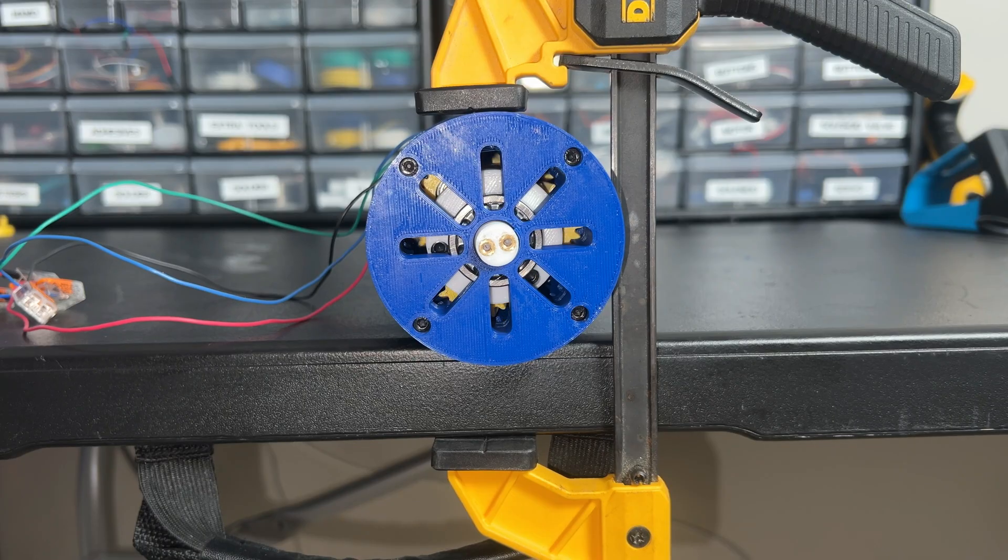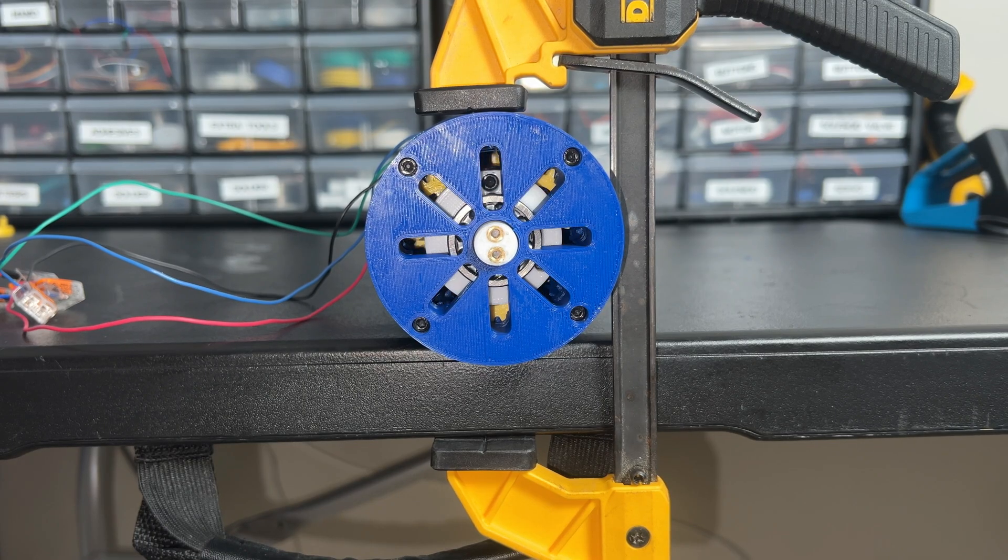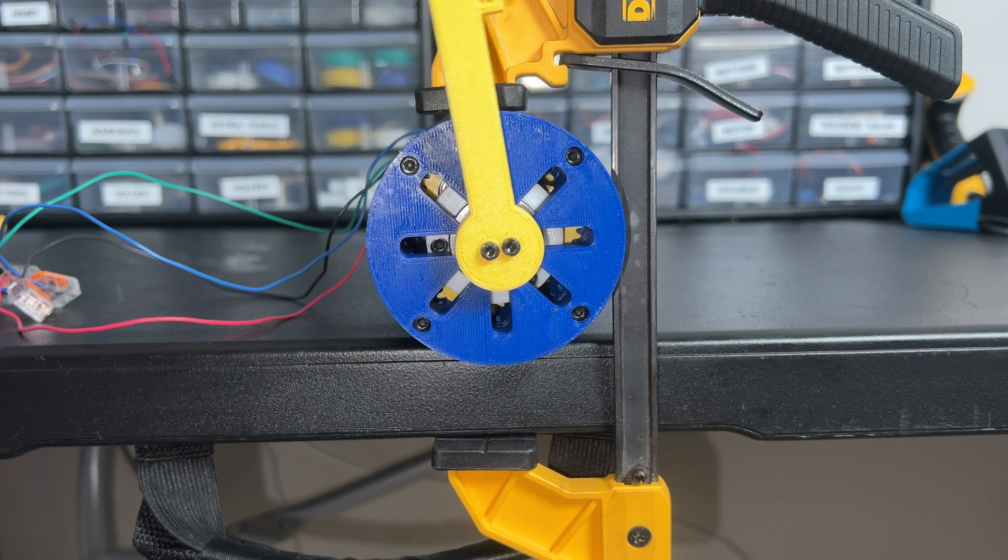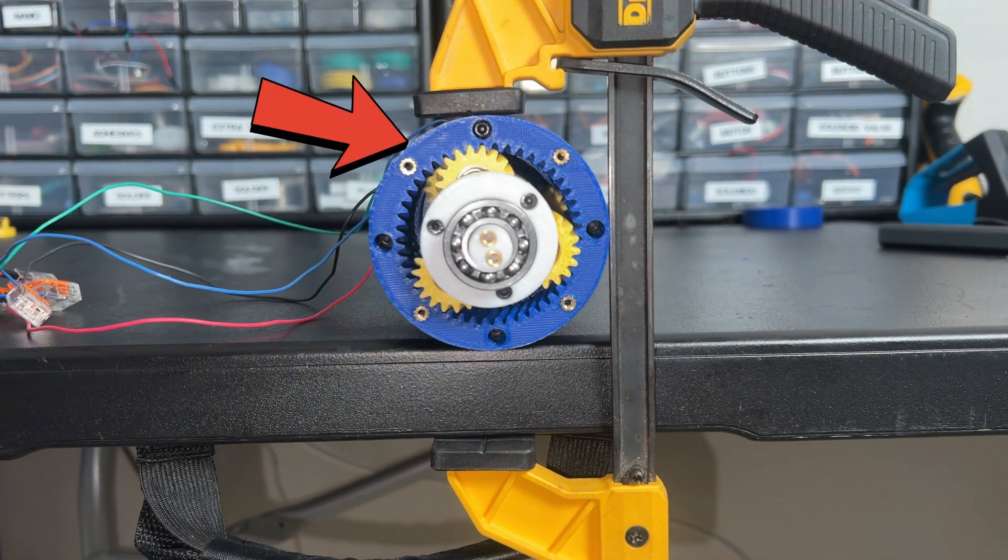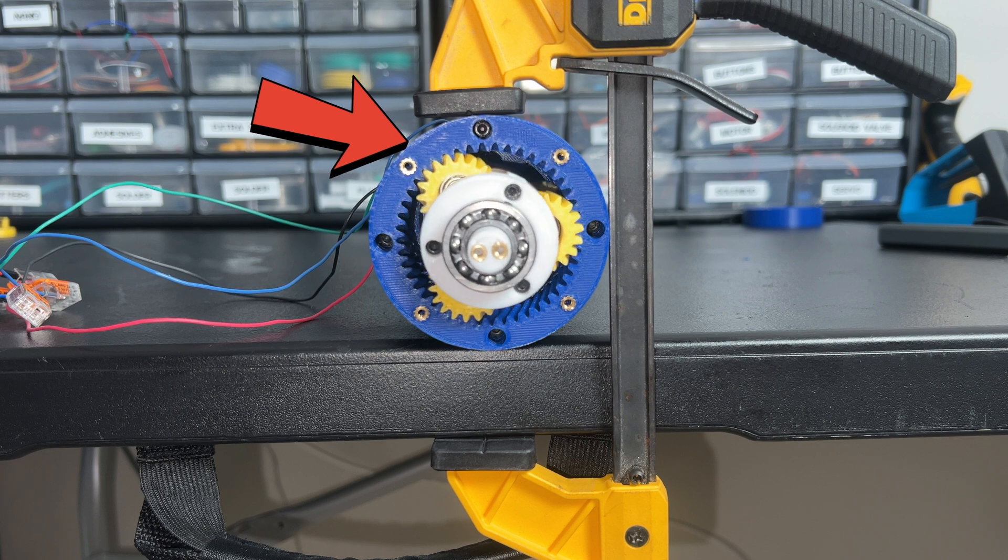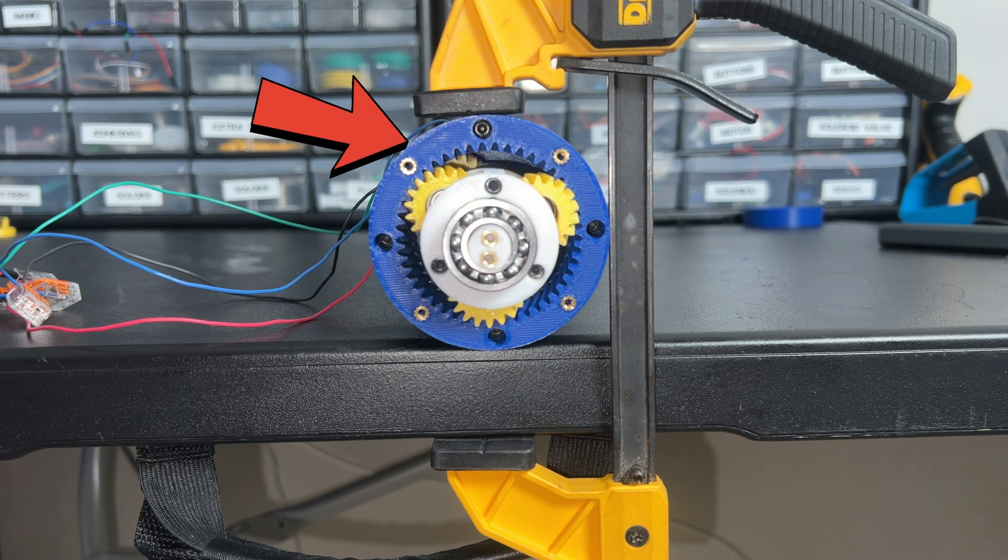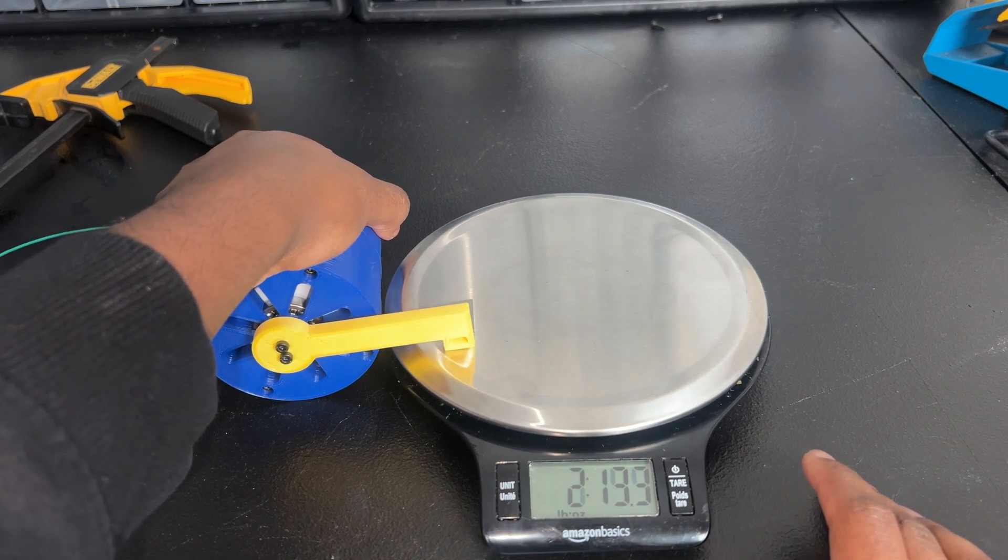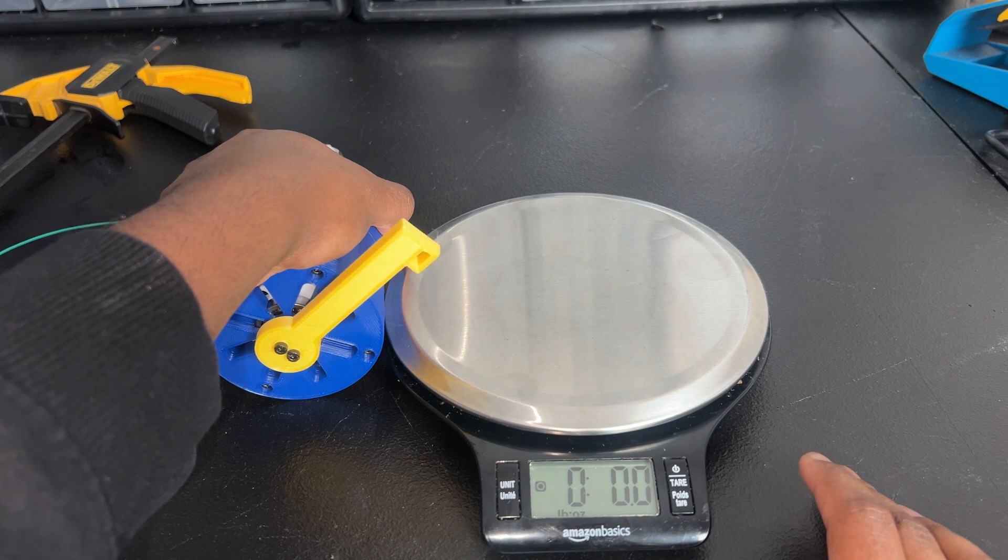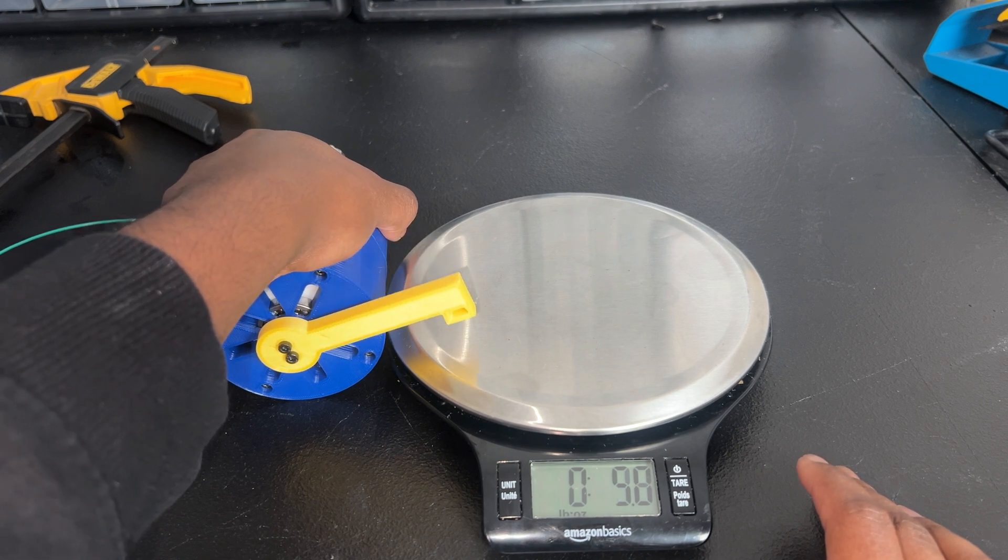And just like that we are back in business. So the cool thing about this when you take off the top you can see the different planet carriers, the speed that they're moving. So the 6 to 1 is in the back, the 36 to 1 is in the front, and I tested this one the exact same way and we're getting six pounds.